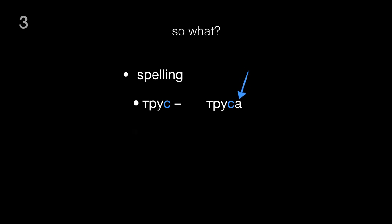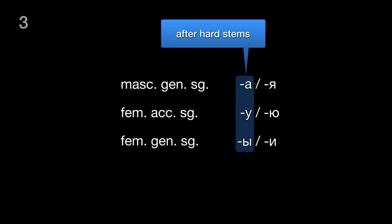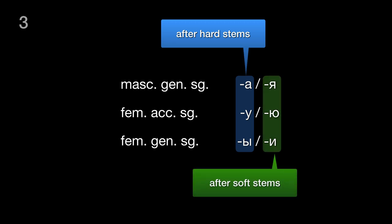For a noun with a soft stem, like ГУСЬ, that same ending will be spelled with the letter Я, because this letter shows that a preceding consonant is soft. And that's why, when you go on to learn about cases, you'll see endings given in pairs: usually the one on the left for stems in a hard consonant like ТРУС, and the second for stems ending in a soft consonant like ГУСЬ.